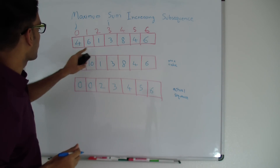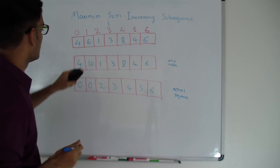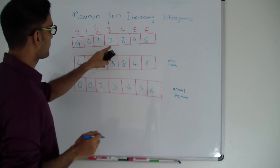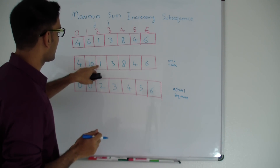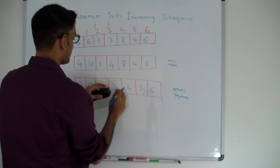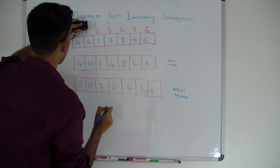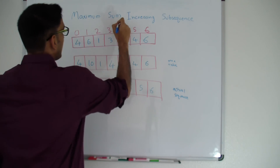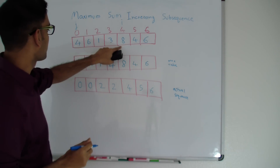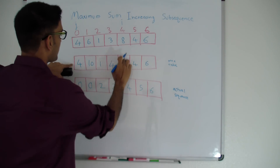For i=3 (value 3): j=0 gives 4, not less than 3; j=1 gives 6, not less than 3; j=2 gives 1, which is less than 3. So the maximum increasing subsequence at i=3 is whatever we found till j=2 plus this value: 1 plus 3 = 4. I indicate this is coming from index 2. Then for i=4 (value 8): j=0 gives 4, less than 8 — so the sum could be 4 plus 8 = 12, coming from index 0.